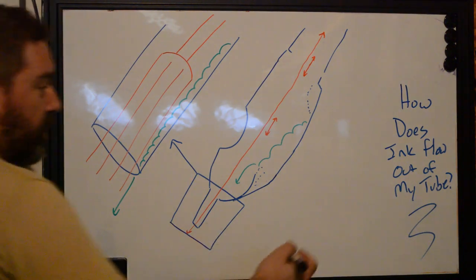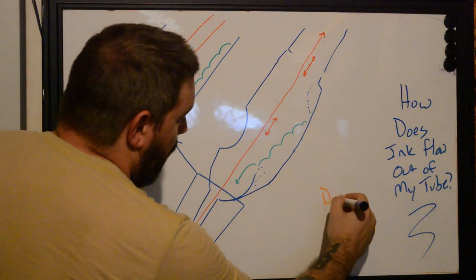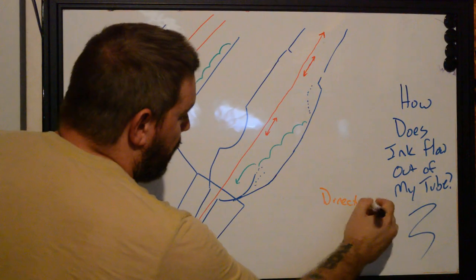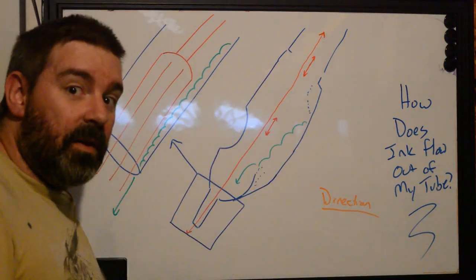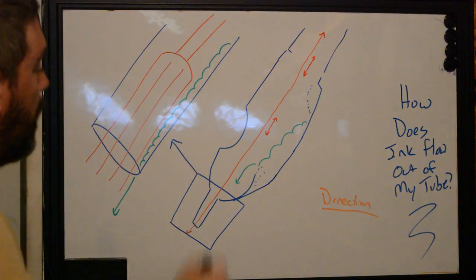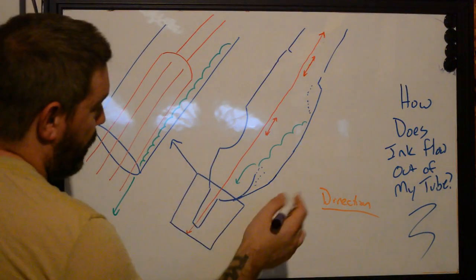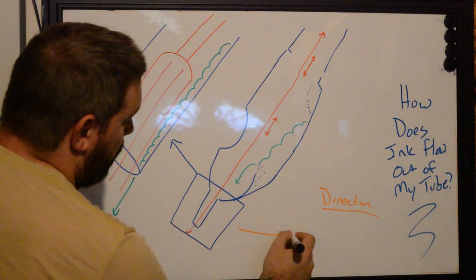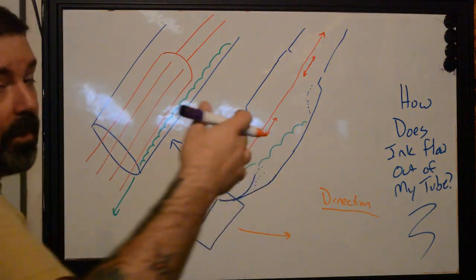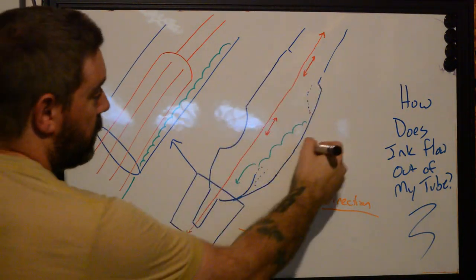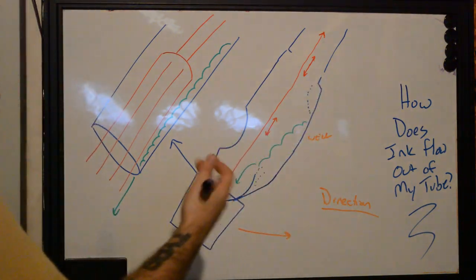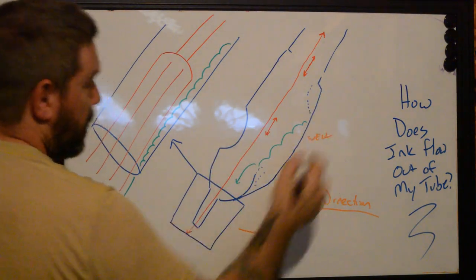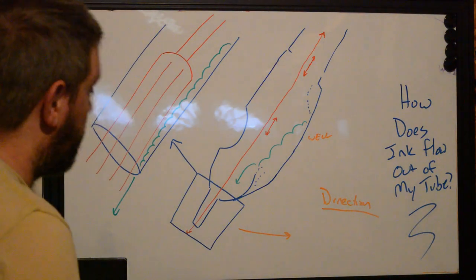The first thing that we always want to address is direction, right? And this is probably the most hotly contested aspect of how to do a tattoo and of anything else that you'll find online. More often than not, you're going to see people, when they're doing a tattoo, pulling backwards against the front of the tube. They're going to be pulling against the well, and we'll call this the well or reservoir. Let's call it a well because it's easier to spell. Rock and roll.